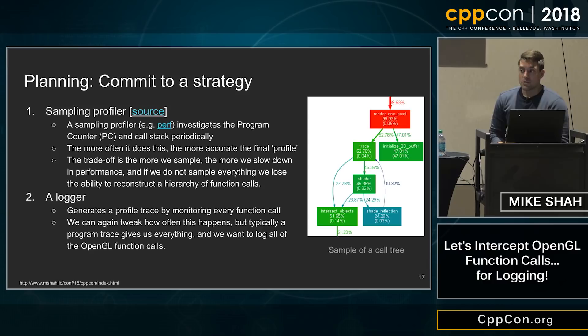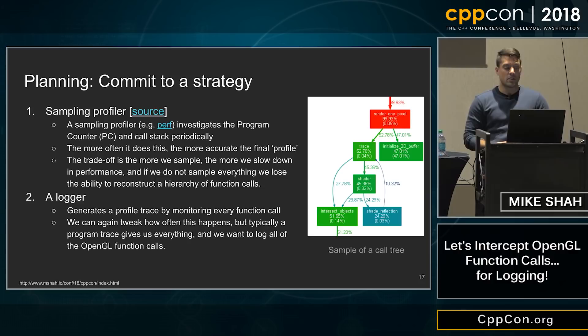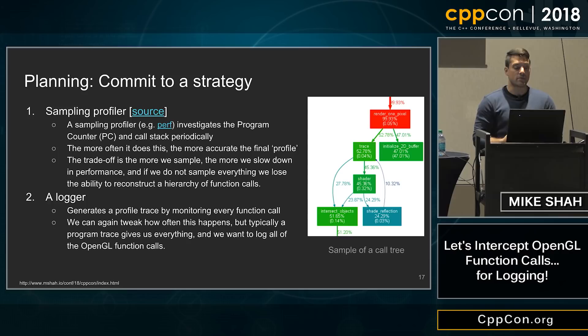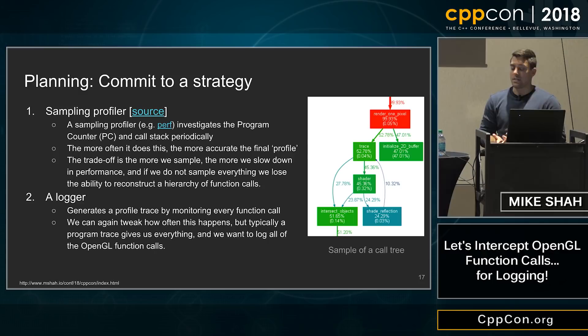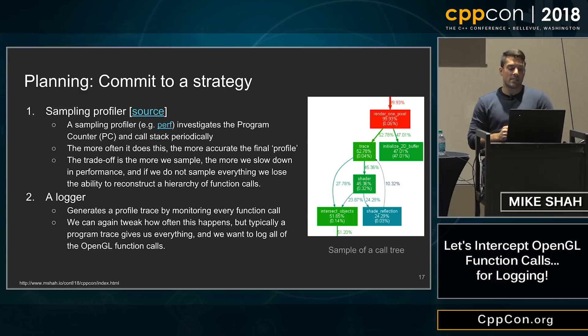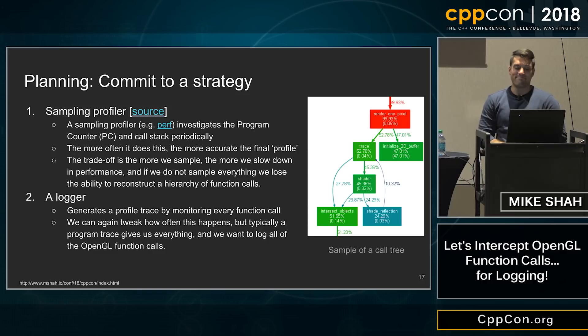First, if I'm building a tool that collects information, I need to commit to some strategy. There are really two strategies when collecting information about a program. The first is a sampling strategy — tools like perf and profilers sample the program counter periodically in the stack. Depending on how many times you land in some address space, that's how many times some function's been called. The more often you sample, the more accurate your profile's going to be. The trade-off is that if we sample more, we're going to slow our programs down. And if we don't sample everything, we'll miss out on some information — which makes it harder to rebuild a call hierarchy.